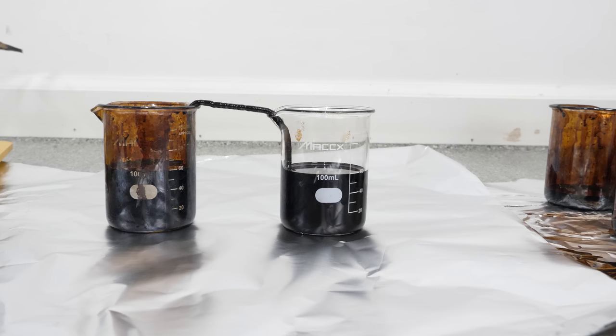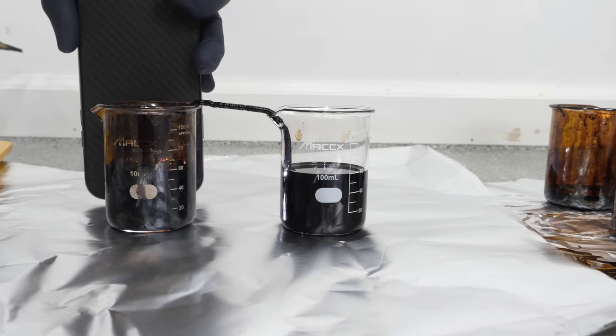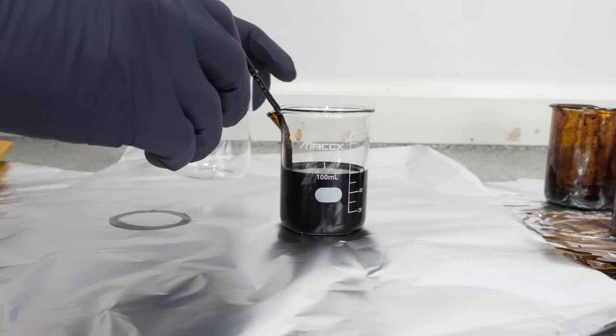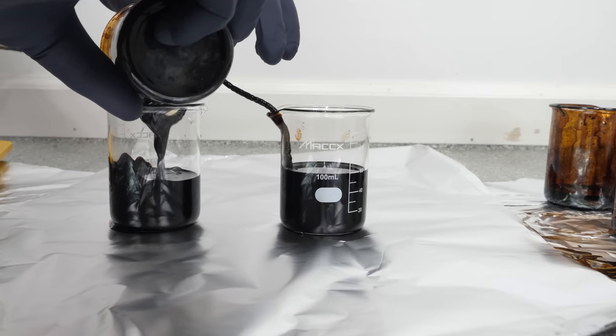Now let's check back on our ferrofluid siphon. You'll notice that the beakers have exactly evened out at 60 milliliters each. So we can never fill the second beaker higher than the initial beaker because that would require some external energy.